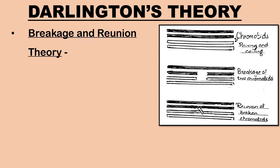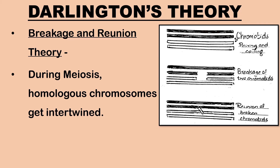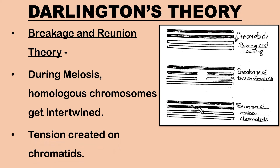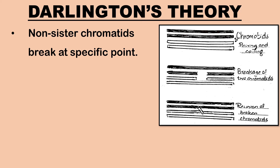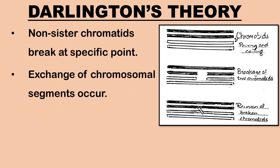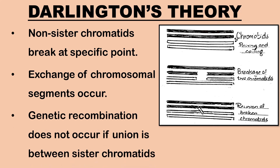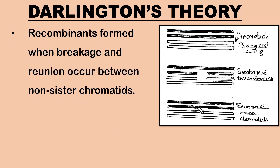Next, let us look into Darlington's theory. The most accepted theory to explain the process of crossing over is the breakage and reunion theory put forth by Darlington. During meiosis, the homologous chromosomes get intertwined, creating strain on the chromatids. The non-sister chromatids of the tetrad break at specific points and exchange of chromosomal segments occurs. There will be no genetic recombination if the union is between sister chromatids; if the break and reunion takes place between non-sister chromatids, it will result in recombinants.